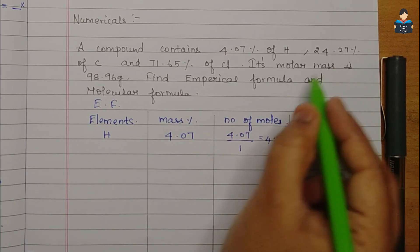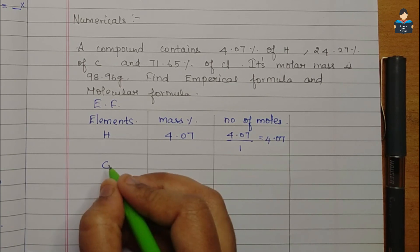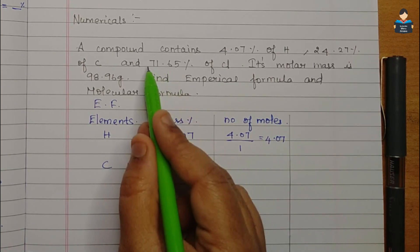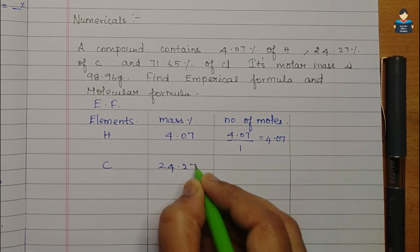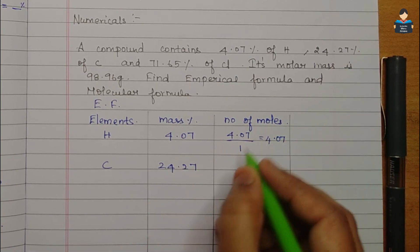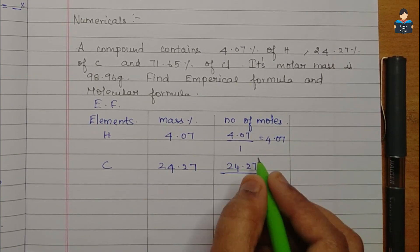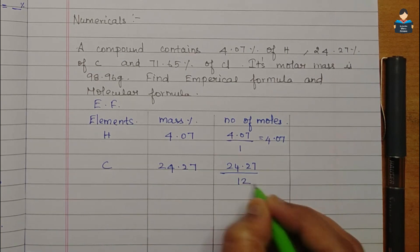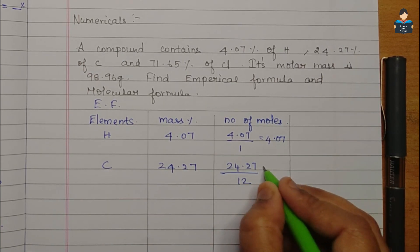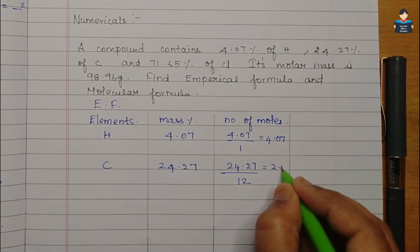Next is carbon: mass percentage is 24.27. Number of moles = 24.27 / 12 = 2.01 moles. Then chlorine: mass percentage is 71.65. Number of moles = 71.65 / 35.5. After dividing, we get approximately 2.01 moles of chlorine.